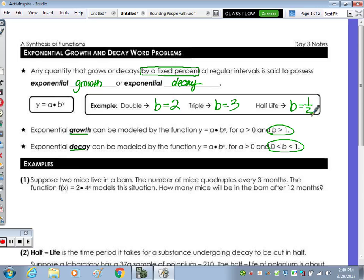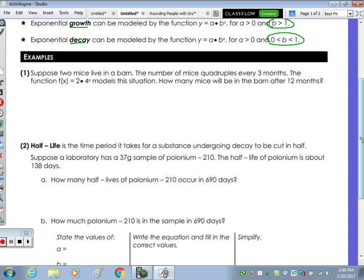Let's take a look at the first question. Question number one gives you the function that models, but you can do these types of questions without an exponential function. It says, suppose you have two mice that live in a barn. The number of mice quadruples every three months. So what's our B? Every three months. So let's look at, here's our start. When we start, we have zero months.